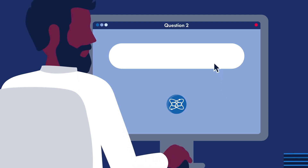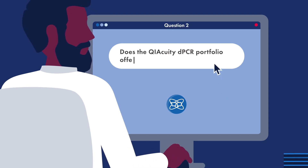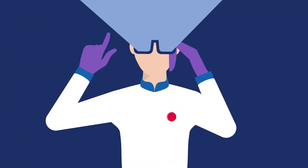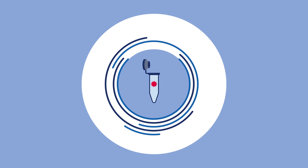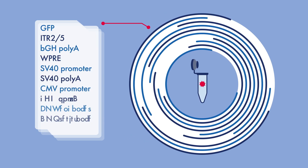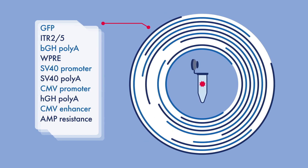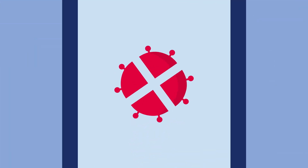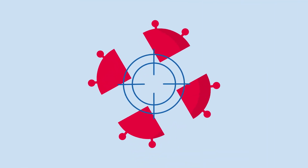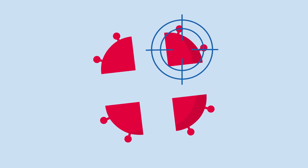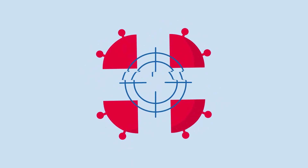Question 2: Does the Kaikuity dPCR portfolio offer assays for AAV quantification? Yes, of course. You can access 10 different assays for AAV quantification with multiplexing capabilities, validated for use with the Kaikuity digital PCR system. Since you can target different parts of your particle, you can obtain more information from one sample.